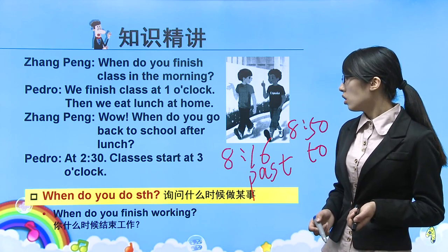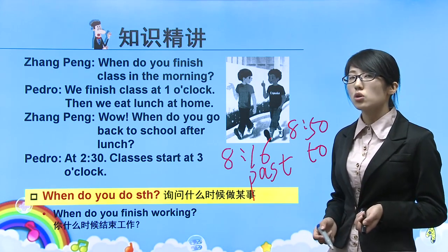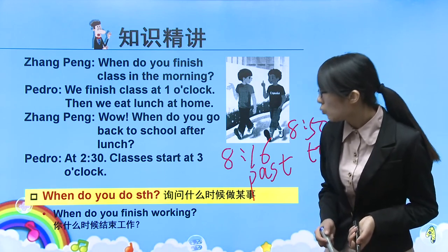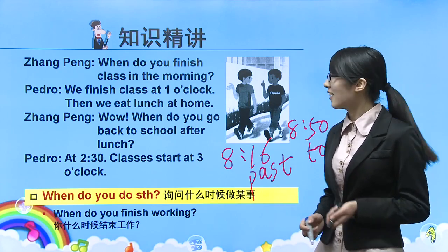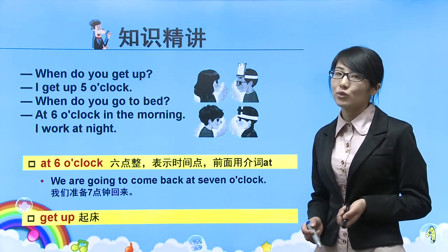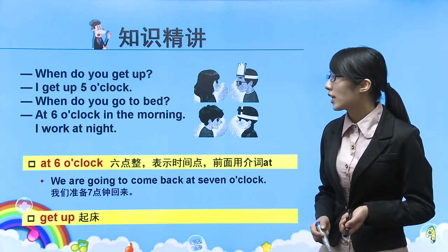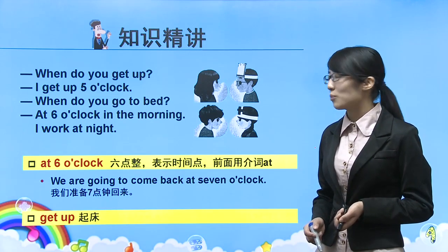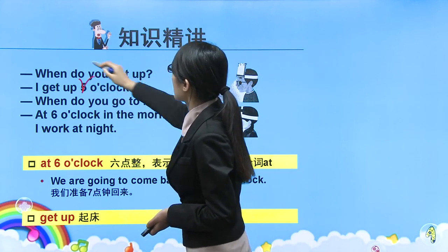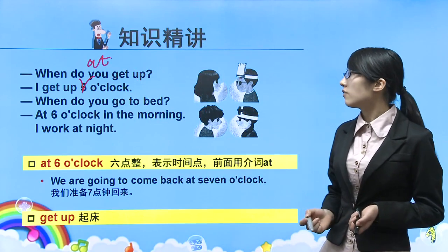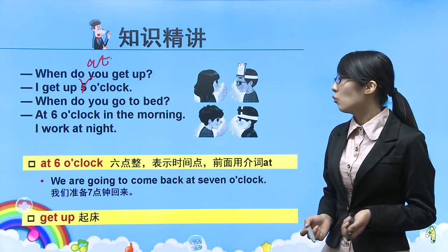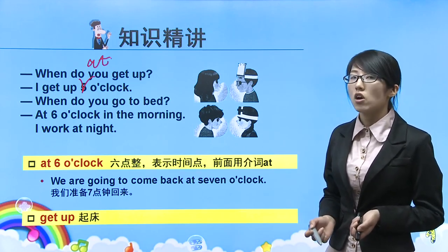句式：When do you do something？询问你什么时候做某件事。例如：When do you do homework? 你什么时候做作业？When do you finish working? 你什么时候结束工作？When do you get up? 你什么时候起床？I get up at five o'clock. 注意要加at，在某一时间点用at。When do you go to bed? 什么时候睡觉？go to bed或sleep都可以。